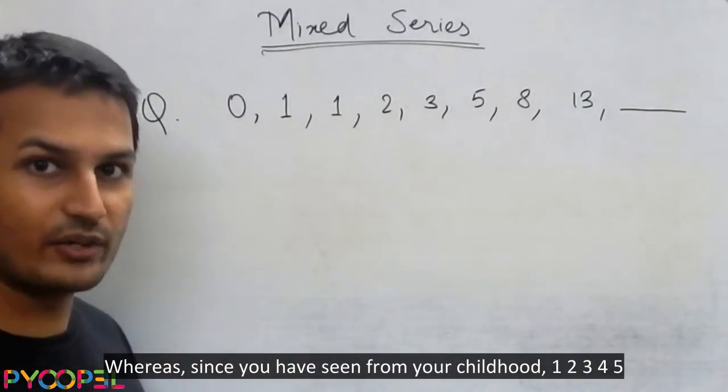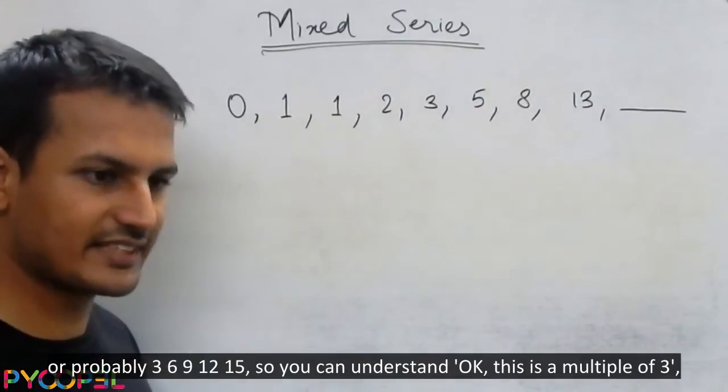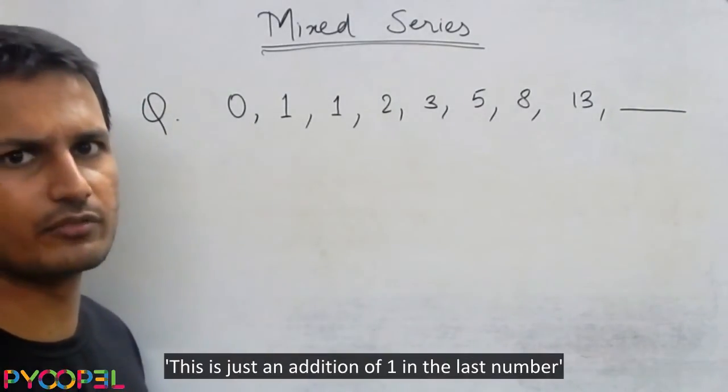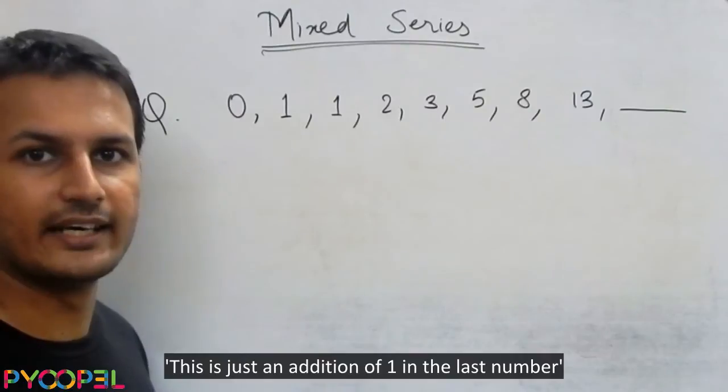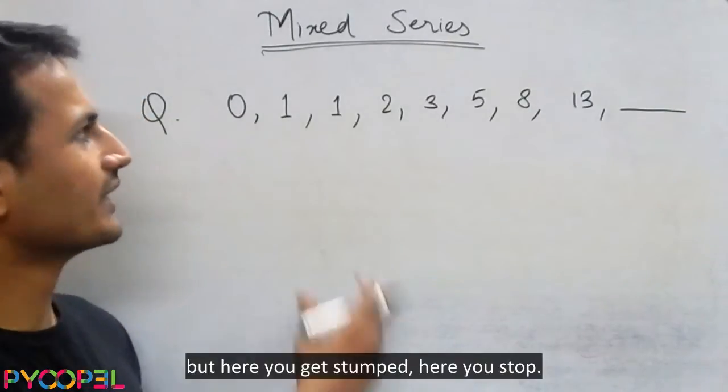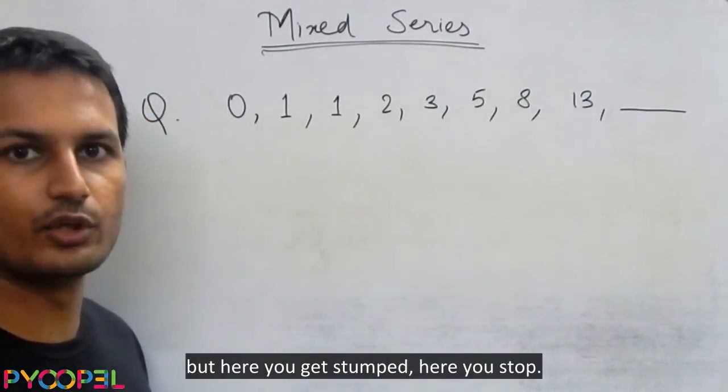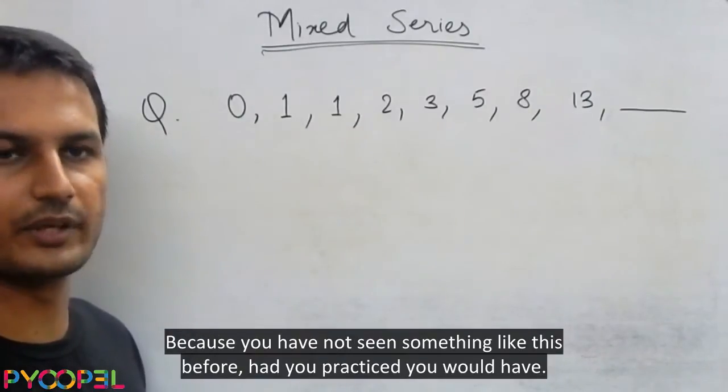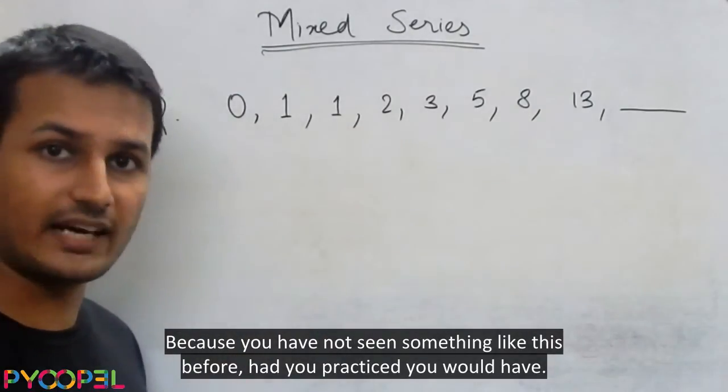Whereas since you have seen from your childhood 1, 2, 3, 4, 5 or probably 3, 6, 9, 12, 15, so you can understand this is a multiple of 3. This is just an addition of 1 in the last number. But here you get stumped. Here you stop. Because you have not seen something like this before. Had you practiced, you would have.